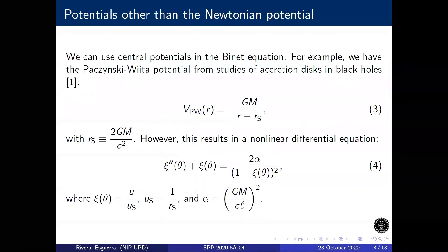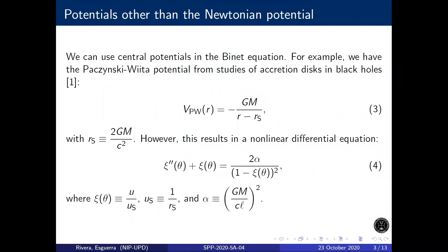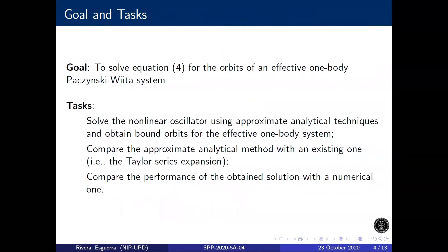However, we are interested in describing regions in which gravity is much stronger, such as around black holes. We can approximate these systems by using the so-called pseudo-Newtonian potentials, one of which is the Bakchinsky-Wita potential. We find out that it turns the Binet equation into a nonlinear oscillator. Our goal therefore is to solve this differential equation to solve for orbits in the Bakchinsky-Wita bound system. This involves solving the nonlinear oscillator using approximate analytical techniques and comparing it with the Taylor series and numerical methods.